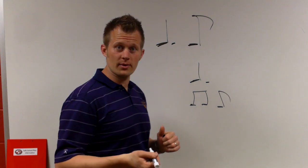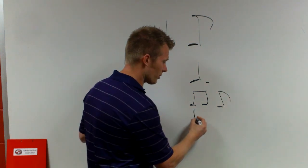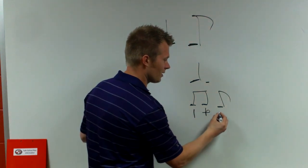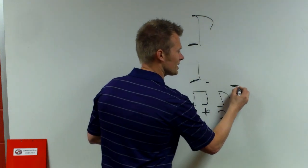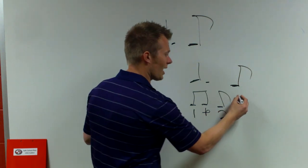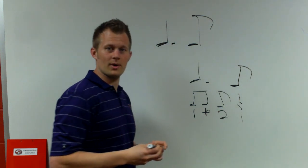So if we were to count three eighth notes, we would use number and number, right? One and two. And then say we tag that last eighth note on the end here, that would be the and, right?